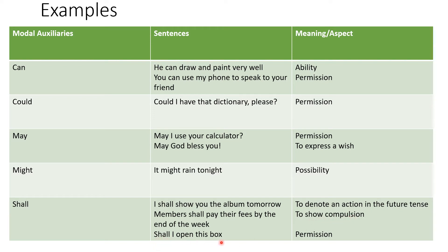'Shall I open this box?' — the meaning or aspect that it conveys is permission. These are some examples of modal auxiliaries in sentences and the meaning or aspect that they convey.